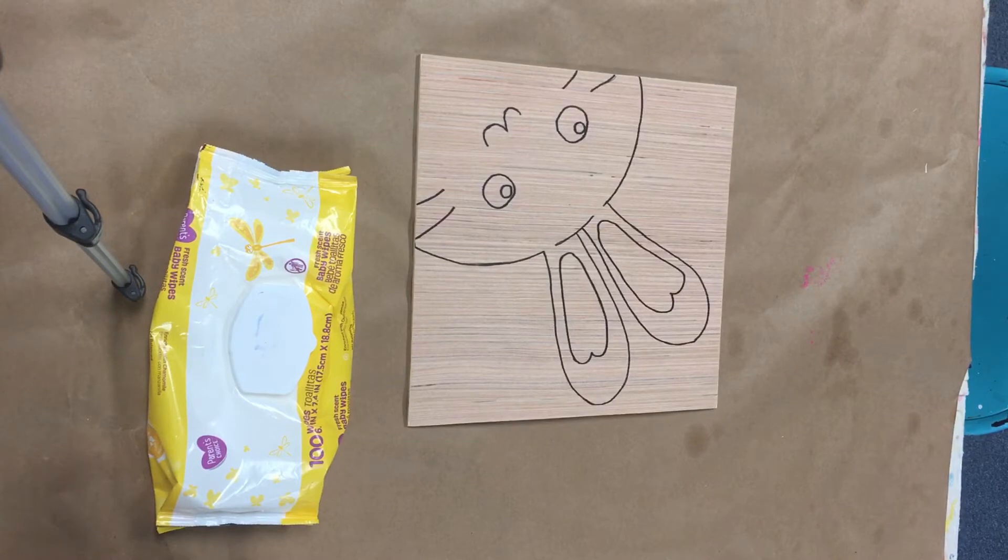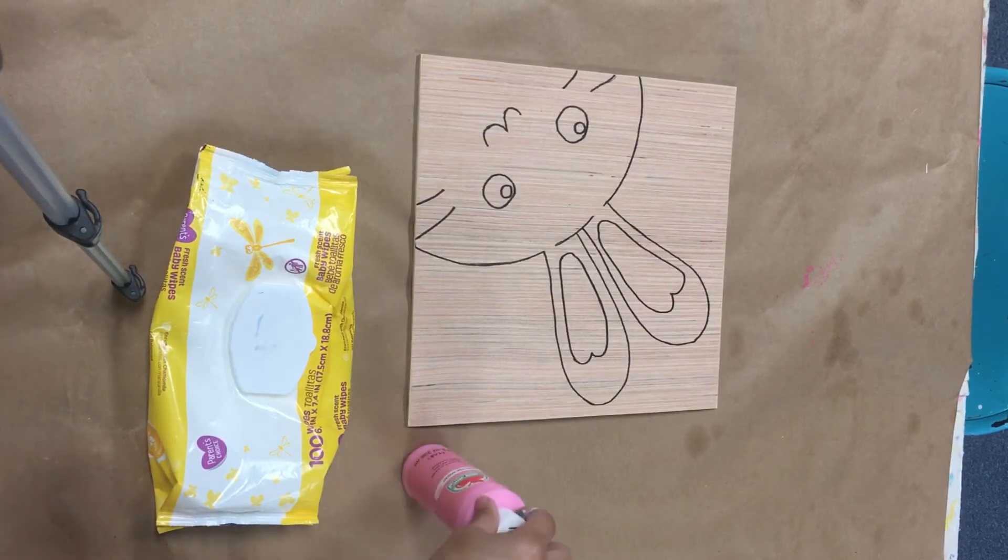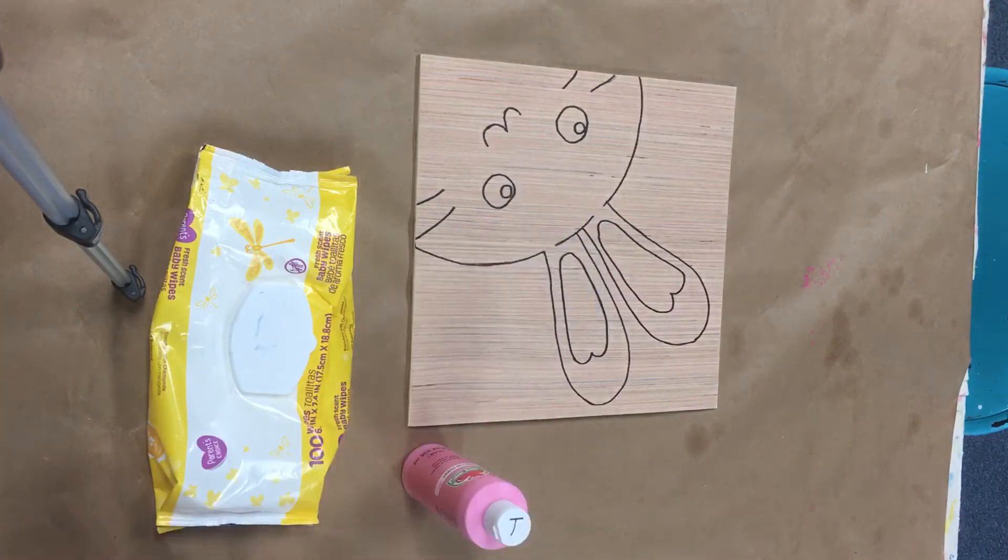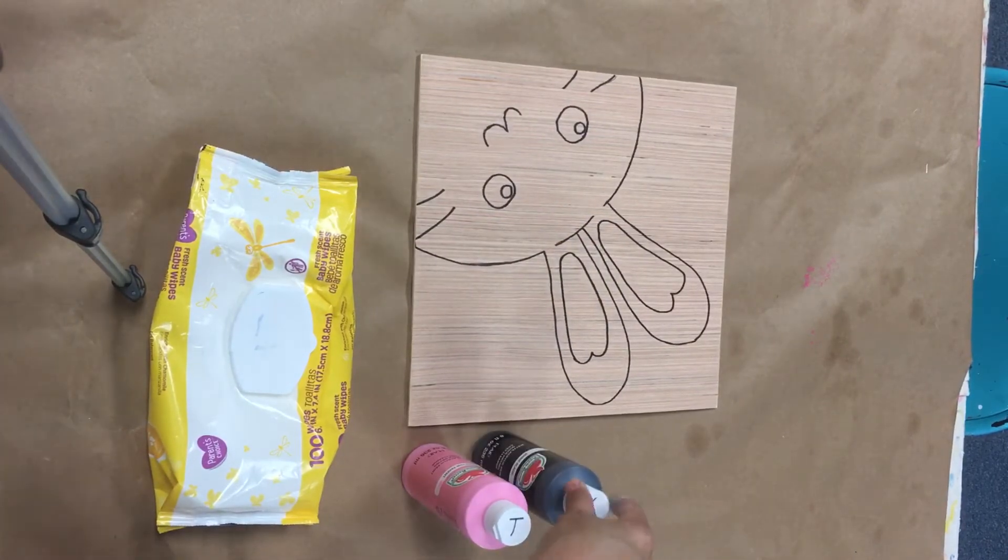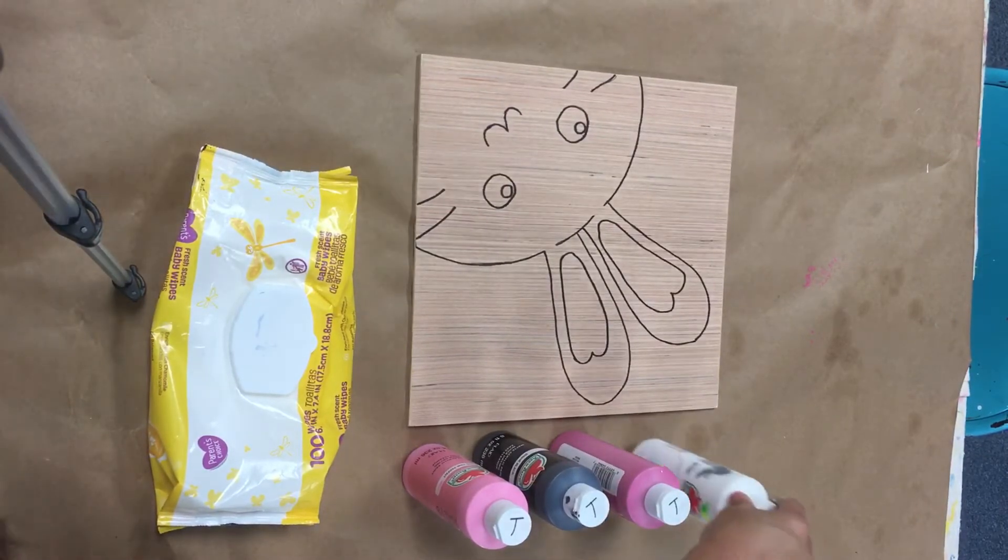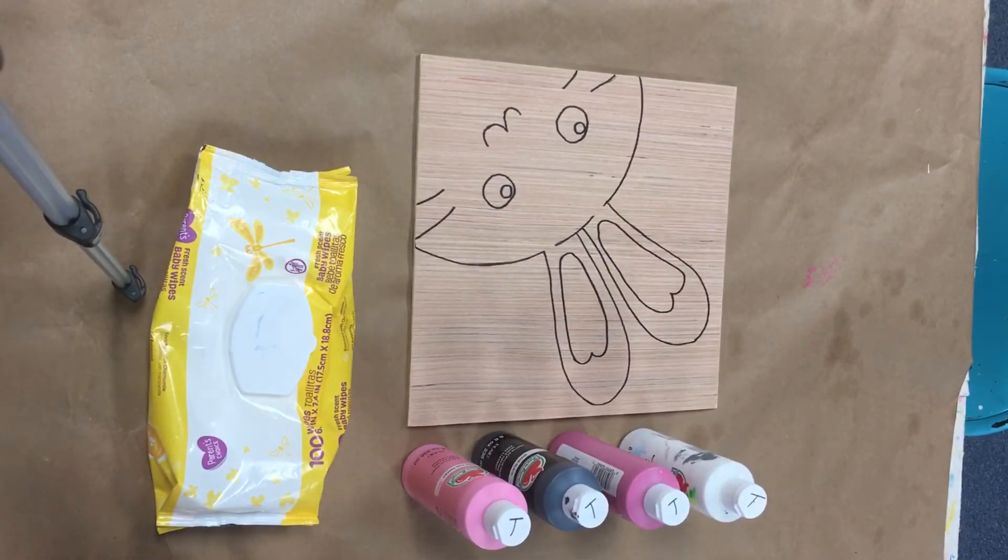Some of the other things that we suggest that you have is you want to make sure you have your paint colors. Now yours will be in these little cases like this. When you come in the studio we have the big bottles. So we're going to set out all the colors that we need for this particular project. At the beginning of the project I will go over what colors are needed so you can make sure you have all your colors out.